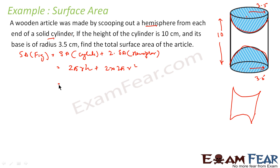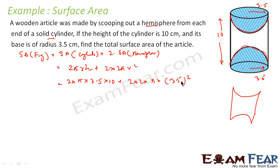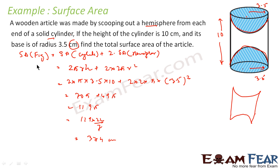Putting in the values: 2 × π × 3.5 × 10 + 2 × 2 × π × 3.5². This becomes 70π + 24.5π = 115π. Multiplying by 22/7 gives 374 centimeters squared. So the total surface area of this article is 374 cm². Very simple.